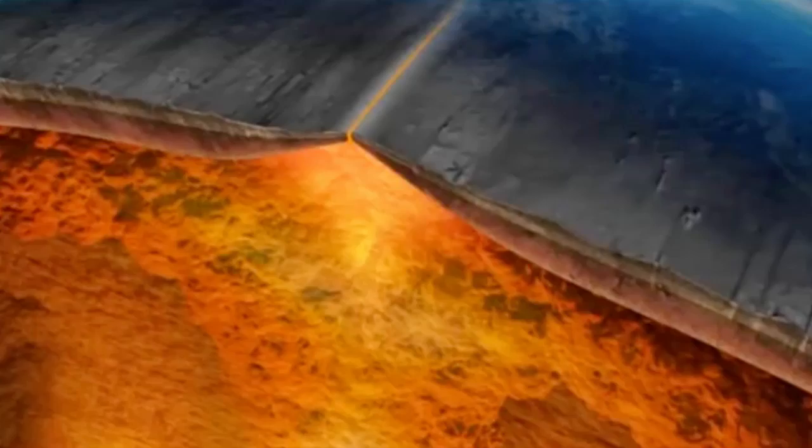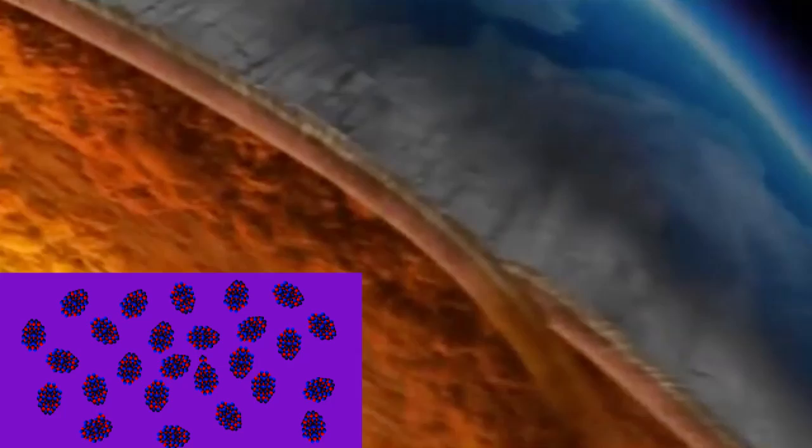If you followed the series, you already know there are heavy elements within our planet that break apart through nuclear fission and release heat energy within the earth. A majority of this heat is released within the earth's more fluid mantle below the lithosphere, which we call the asthenosphere.